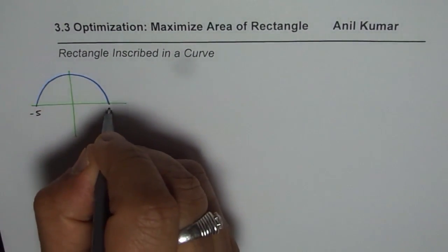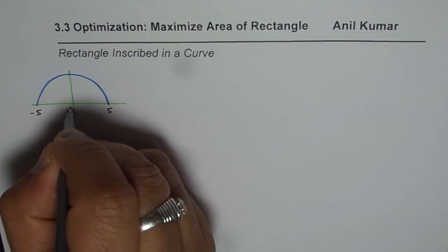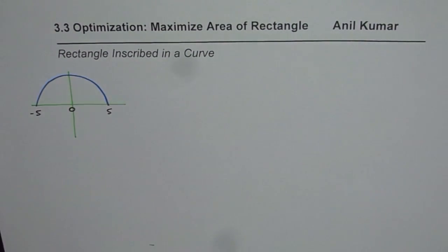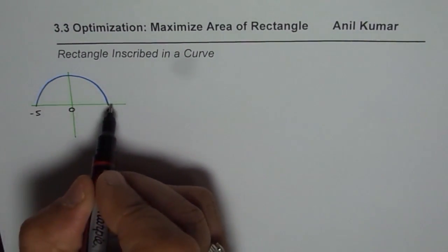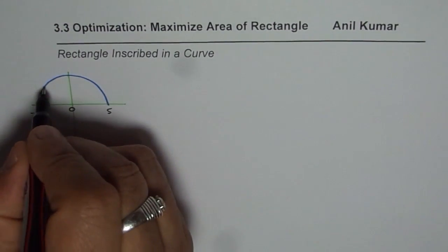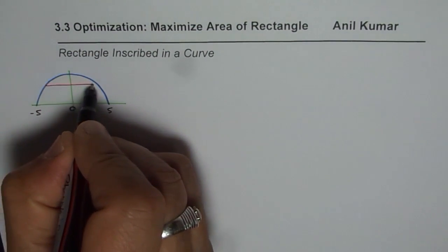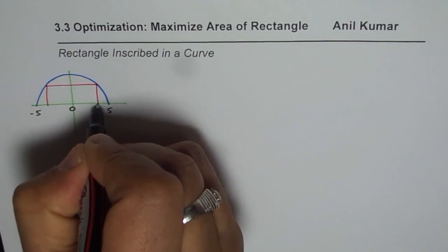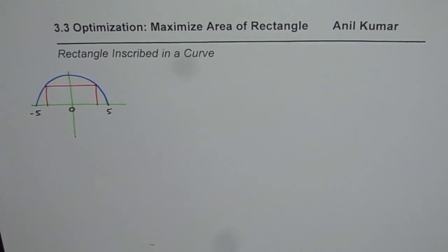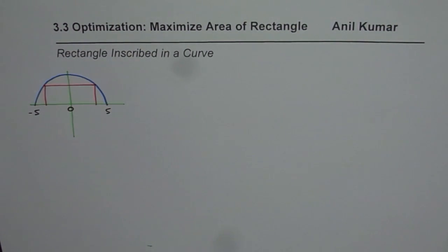That means this end will be minus 5 and that end will be 5. What we need to do is find the area of a rectangle which can fit into the space above the x-axis, with vertices on the semicircle, with maximum area. So this is the optimization question.